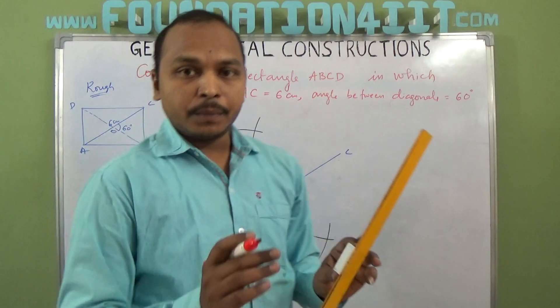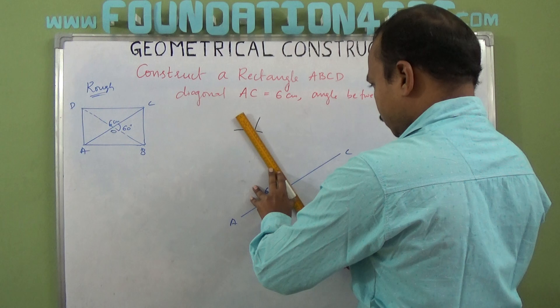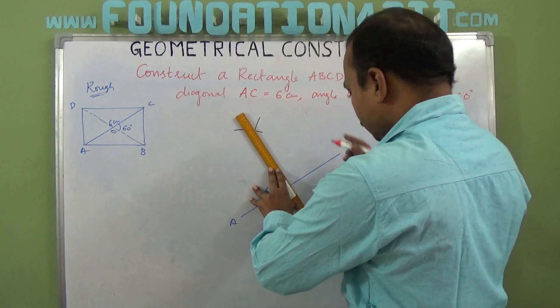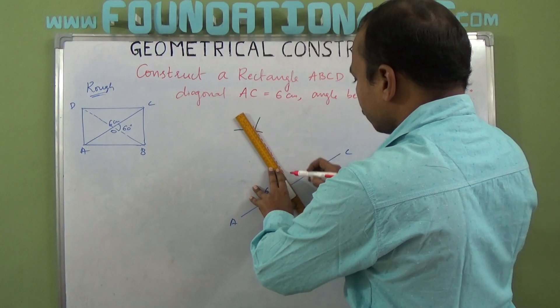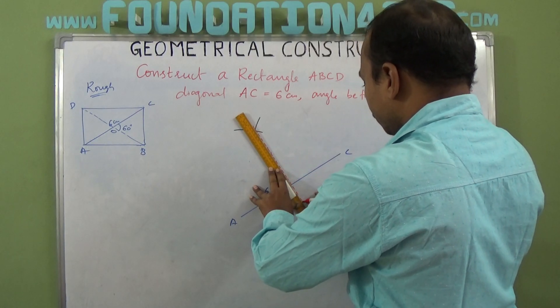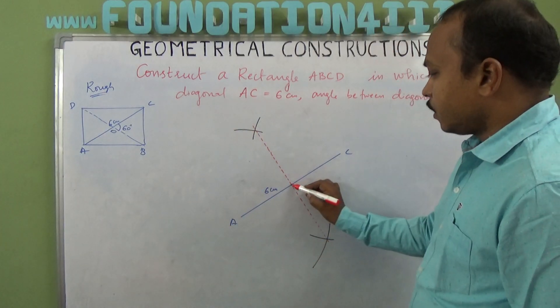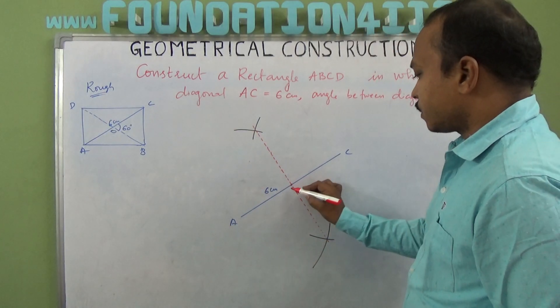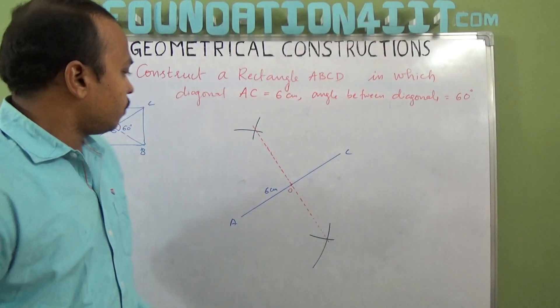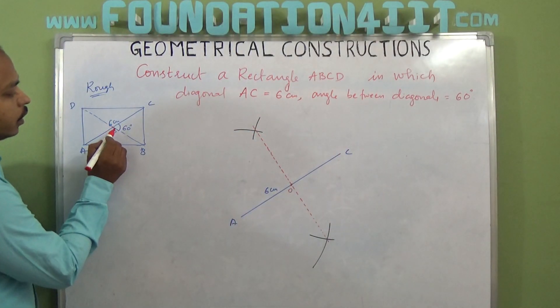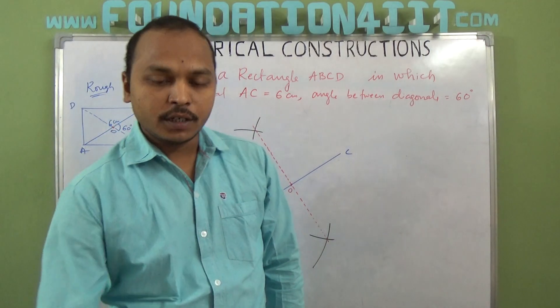The midpoint of AC, take some point O. Now at the midpoint, I need to construct angle 60 degrees because another diagonal must be at 60 degrees.